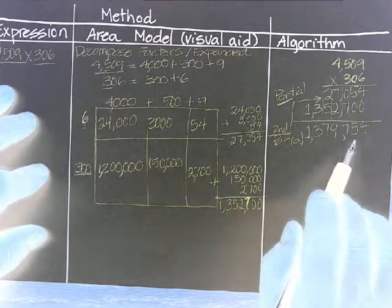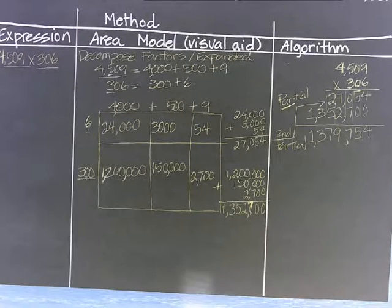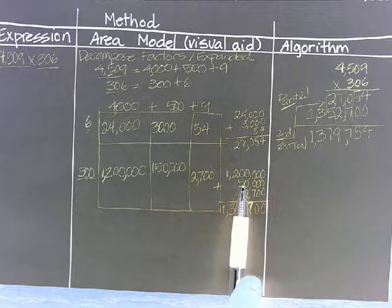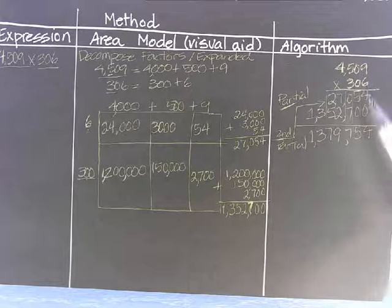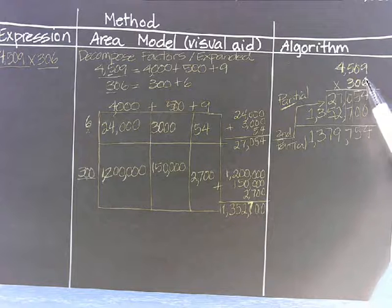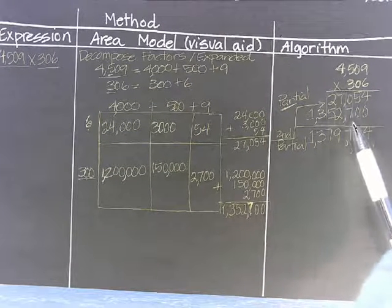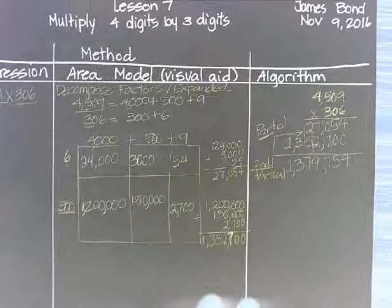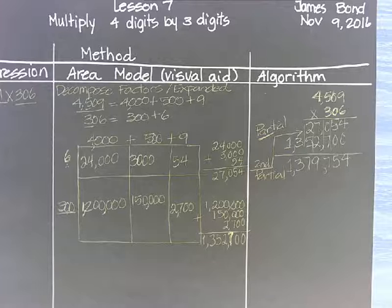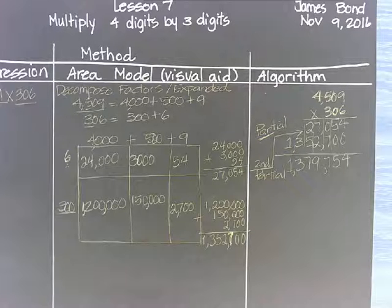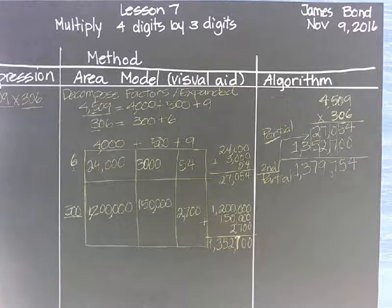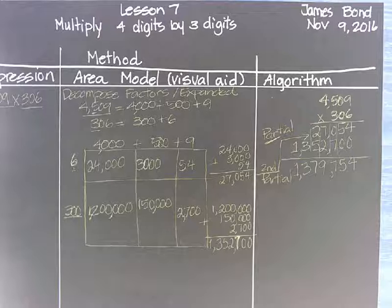My friend, this is how you use the area model to find partial products to solve the algorithm, the multiplication that is stated here and adding the partial products in the algorithm. Thank you, my friends. Remember, this is James Bond speaking from its hideout. Have a good day. Enjoy these multiplication lessons and practice them again until you get them right, my friends. Copy the problem. Solve it three times, four times, however many times you have to do it. Become a better mathematician.